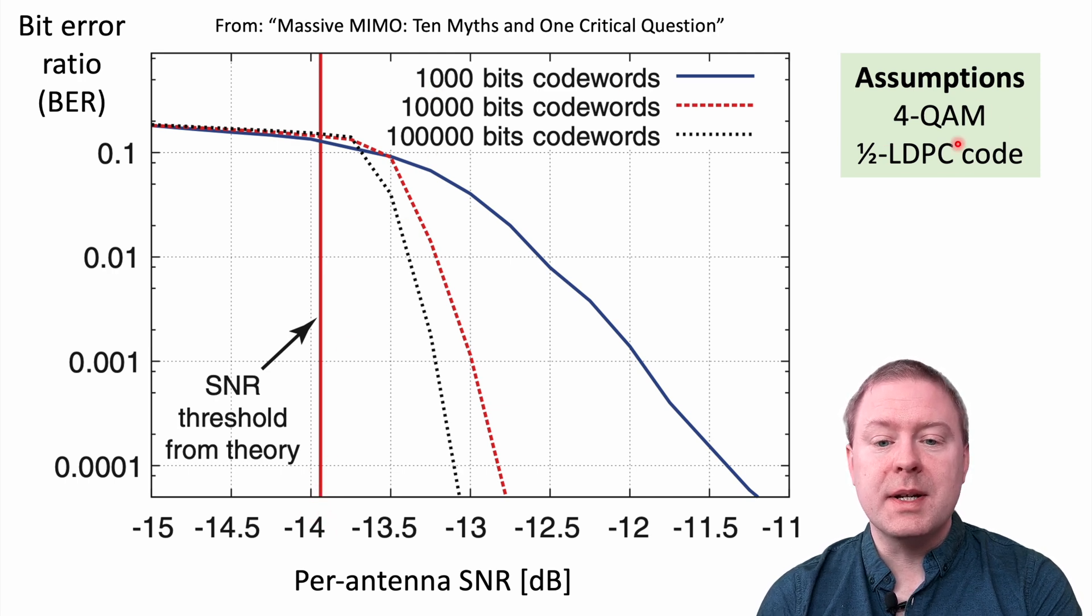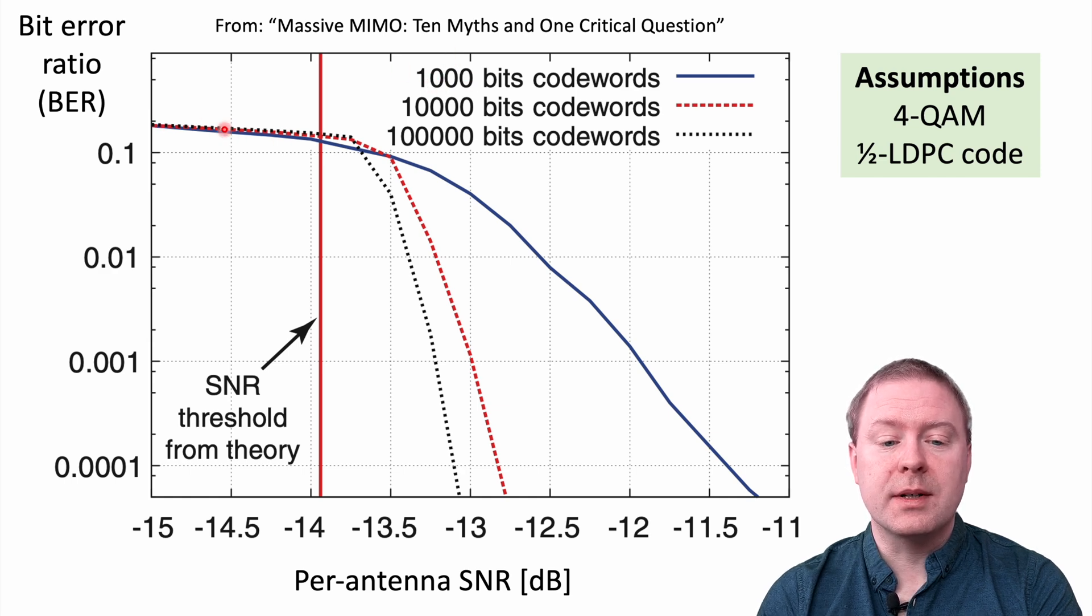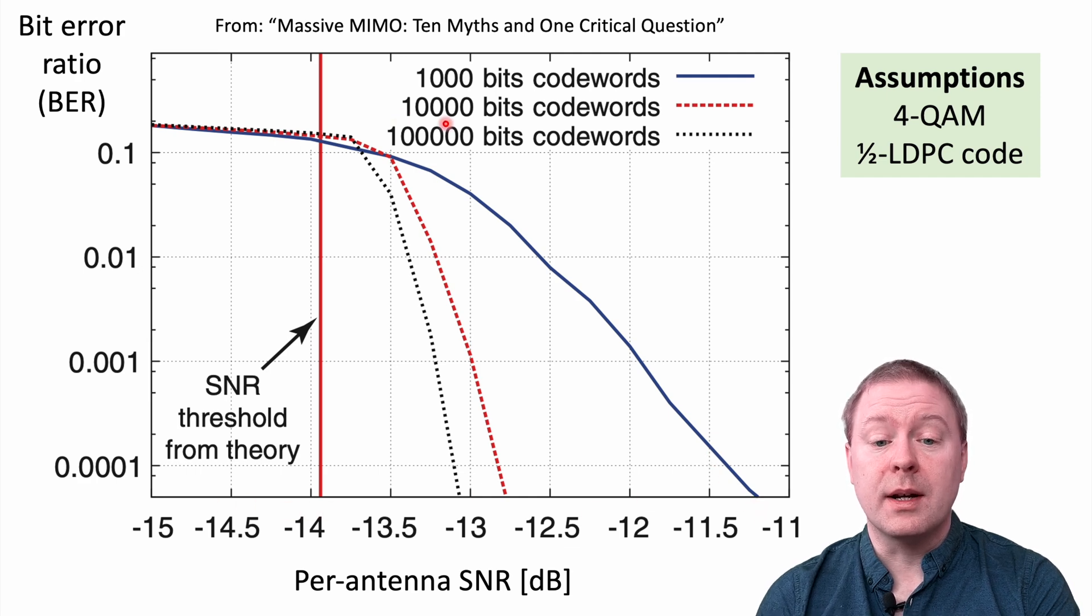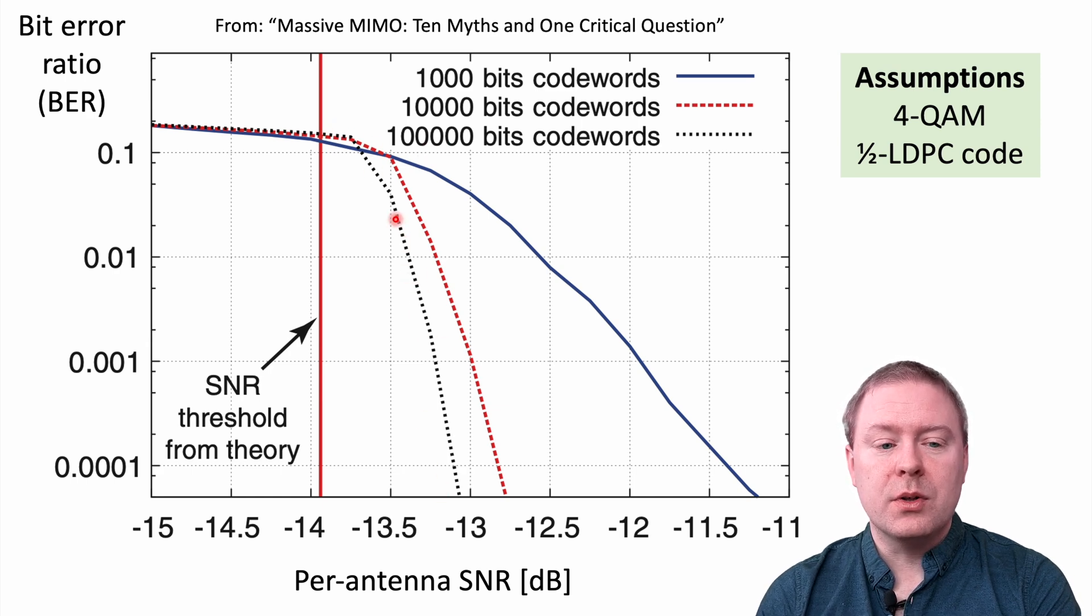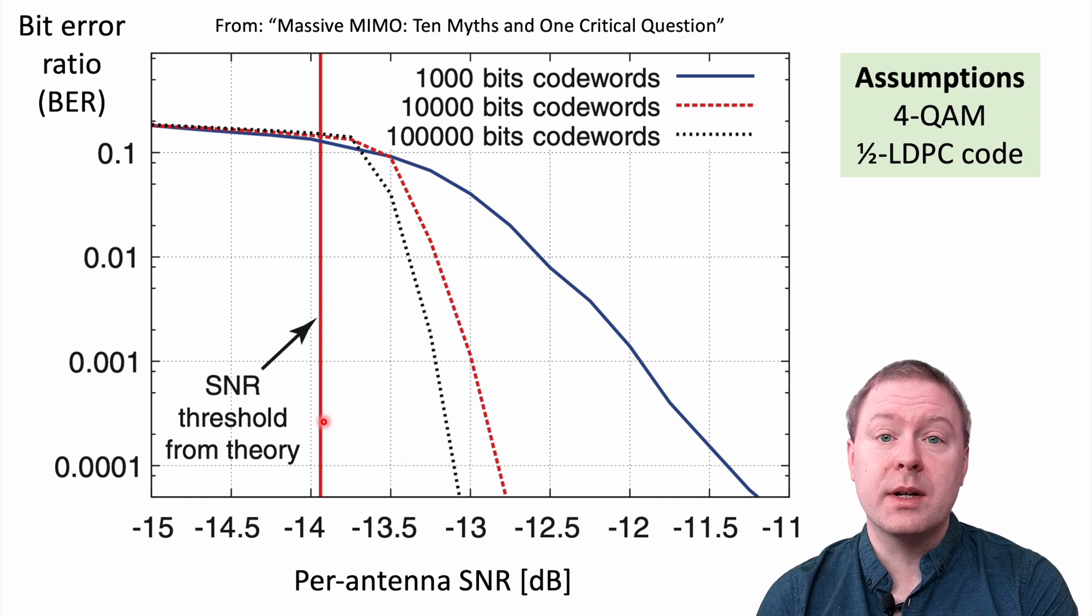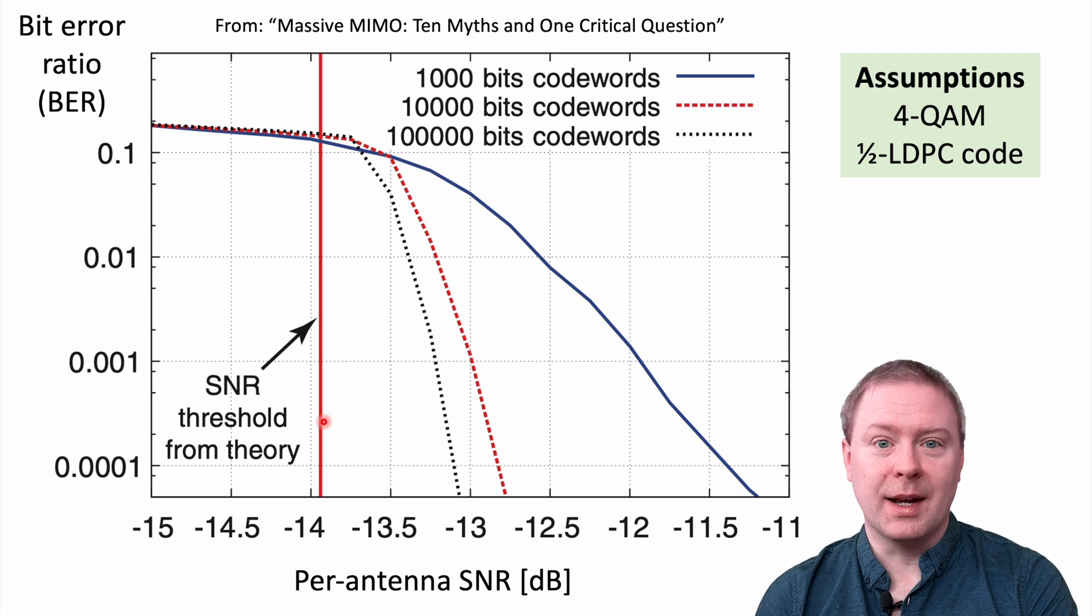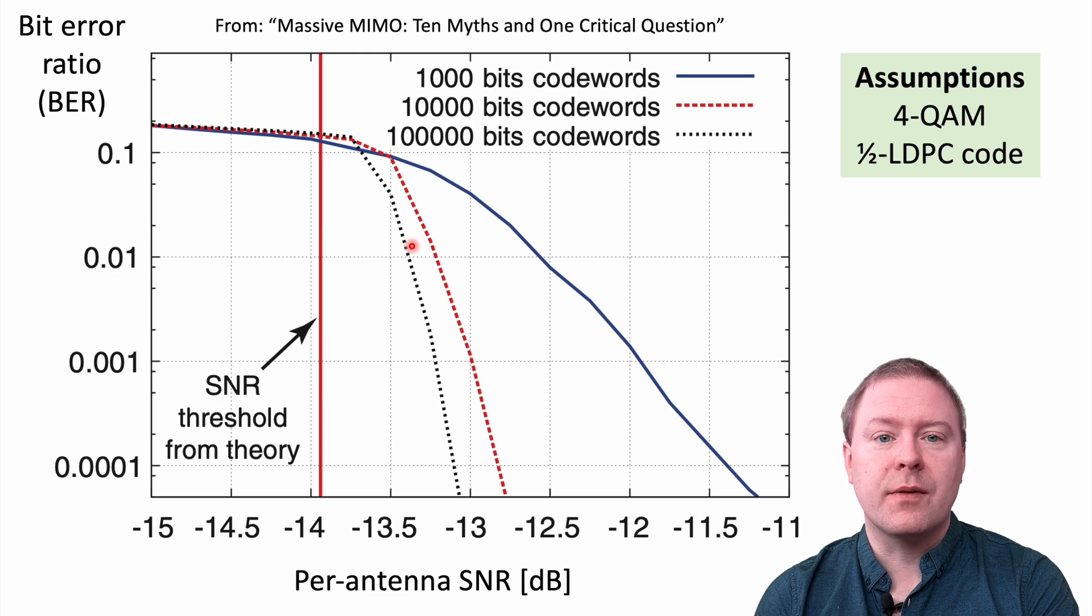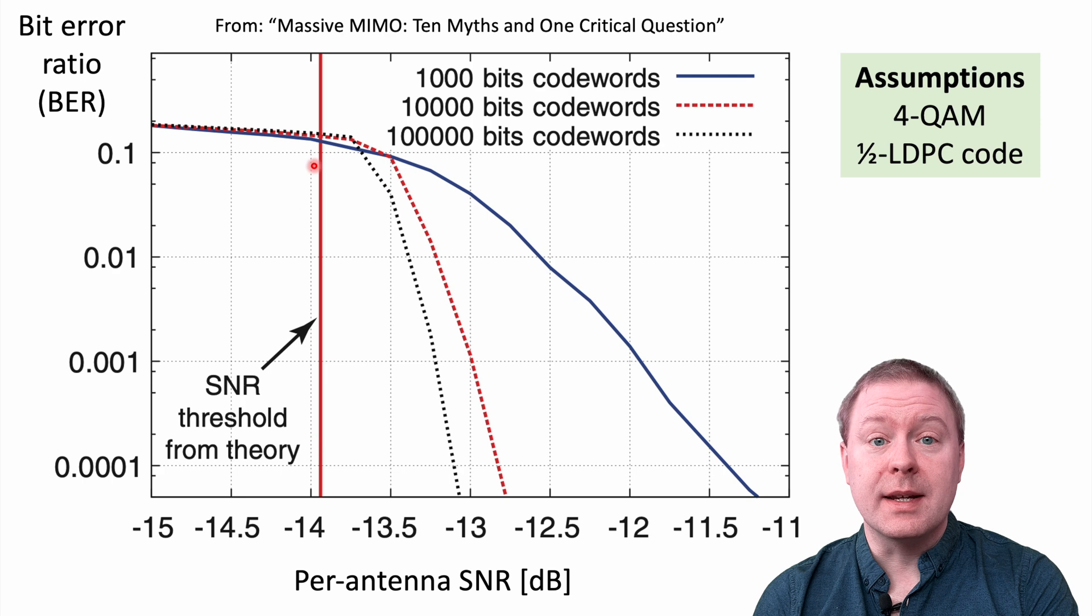Then we are transmitting with this LDPC code with different codeword lengths. A thousand bits, then you see for different SNRs you get different BERs. It goes down with increasing SNR. With 10,000 bits you get this red curve. With 100,000 bits you get this black curve. You can see that the point where the BER starts to fall down very rapidly towards zero moves closer and closer to the point the capacity formula is predicting. So when you're transmitting in a practical way with long blocks of data, you will be able to predict what SNR you need with the capacity formula.